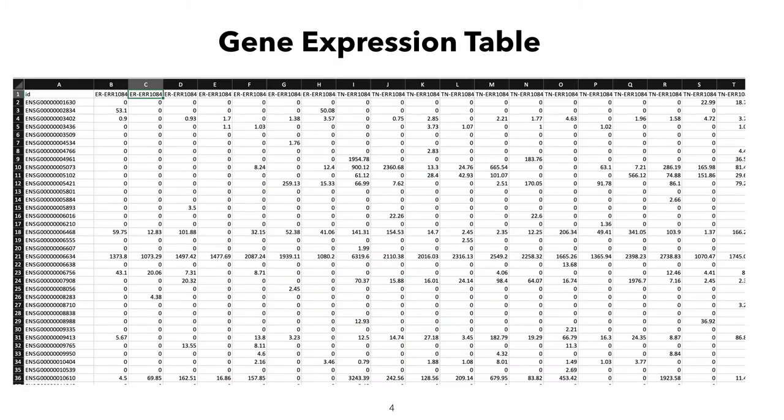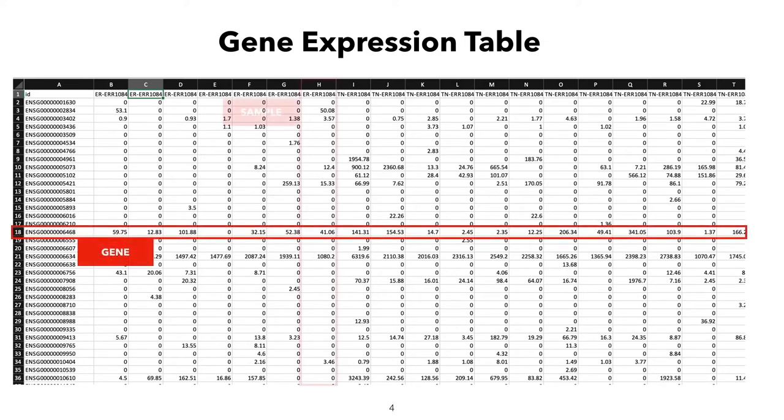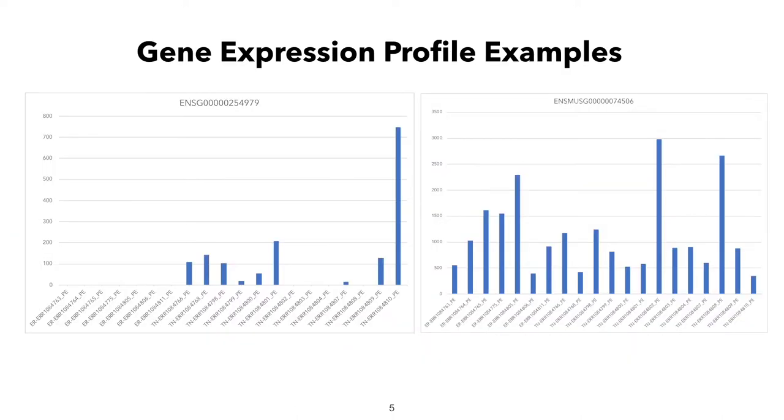In the first Transcriptomics course, we learned about processing short reads and converting them into a table of expression. The table has genes for rows and samples for columns. In each cell, there is a number corresponding to the level of expression for this gene in a given sample. In the gene expression table, we can find genes that are expressed at different levels in samples.